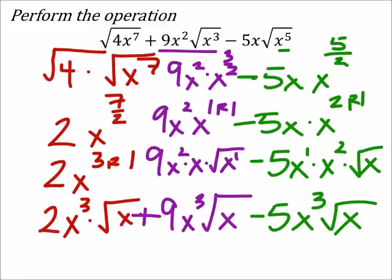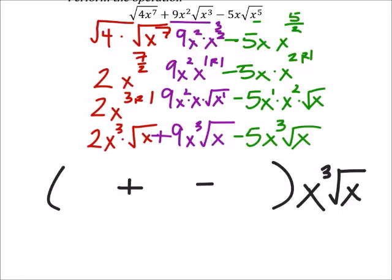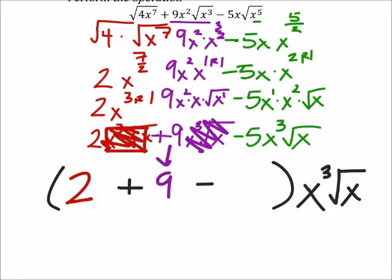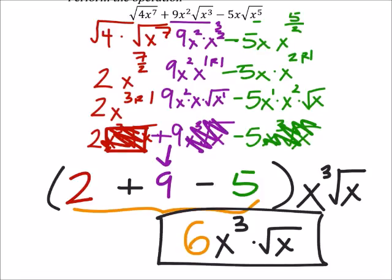Now we factor out x cubed times the square root of x from each term. Factoring it out from the first term leaves two, from the second leaves nine, and from the third leaves five. Combining those: two plus nine minus five is six. So the result is six x cubed times the square root of x. The multiplication symbol is included to clarify it's x cubed, not the cube root of x.